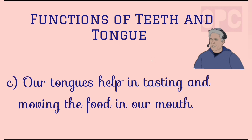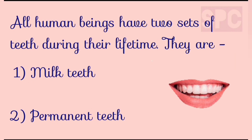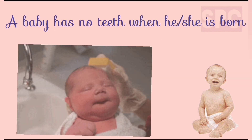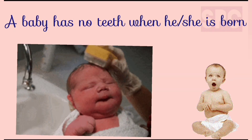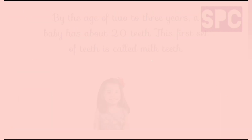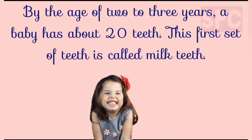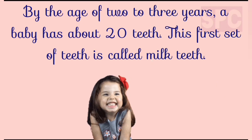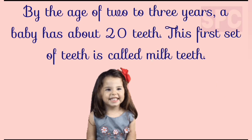Students, all human beings have two sets of teeth during their lifetime. The first set is called milk teeth and the other set is known as permanent teeth. When a baby is born, it has no teeth. The first tooth comes out when the baby is about six months old. By the age of two to three years, a baby has 20 teeth — this first set is the milk teeth.